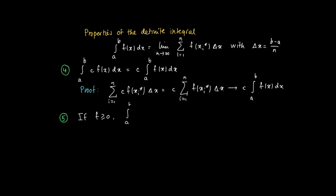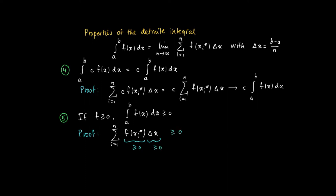Another property: if f is greater than or equal to 0 on the interval a, b, then the integral is also larger than or equal to 0. The proof is simple. Since the definite integral from a to b of f(x) dx is the limit of the Riemann sums, we just need to show that these Riemann sums are non-negative, since non-negative terms cannot converge to something negative. That's easy to see since f(x_i star) is always non-negative and delta x is always chosen positive, so we get a sum of products of non-negative terms, which is indeed non-negative.